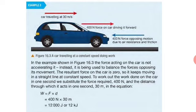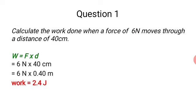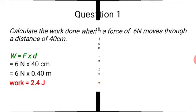Next example: calculate the work done when a force of 6 newtons moves through a distance of 40 centimeters. Use the same formula, substitute the values — force is 6 newtons and distance is 40 centimeters — but you must convert centimeters into meters before calculating.